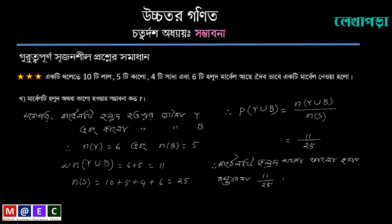The number of U union B equals 25. The number of Y equals 6 and the number of B equals 5. This must not be the case because the number of U union B does not satisfy the union condition.